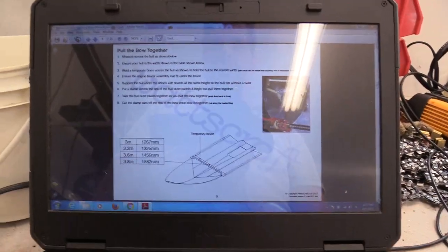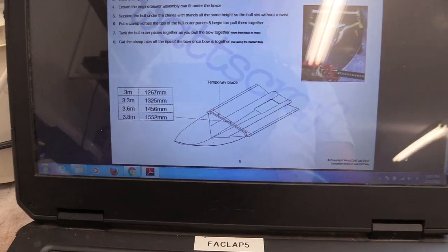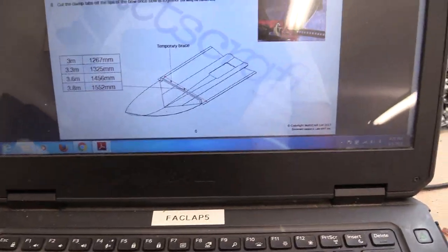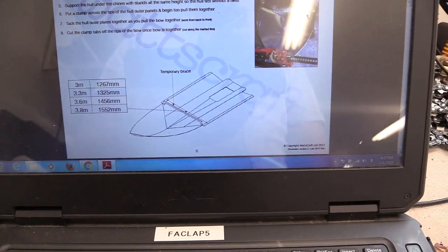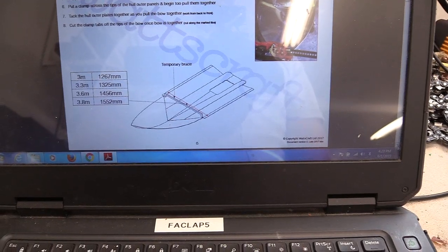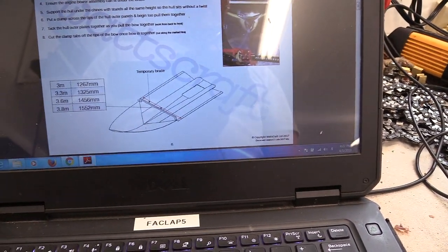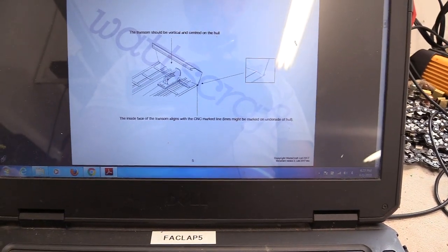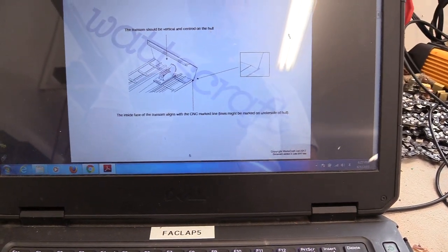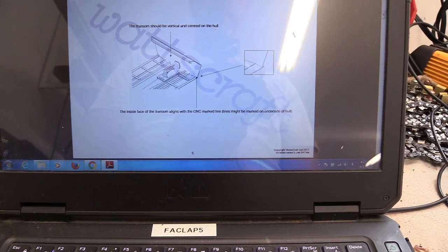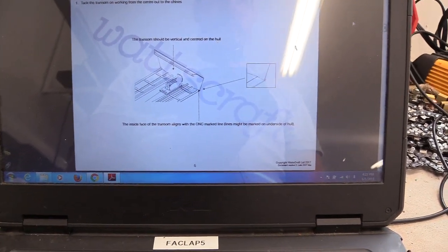And then after tacking the transom on, it says to put in that brace at a certain measurement to hold the width of the boat. So it's saying tack the transom on next after I flip it over. So be it, I guess that's the next step.